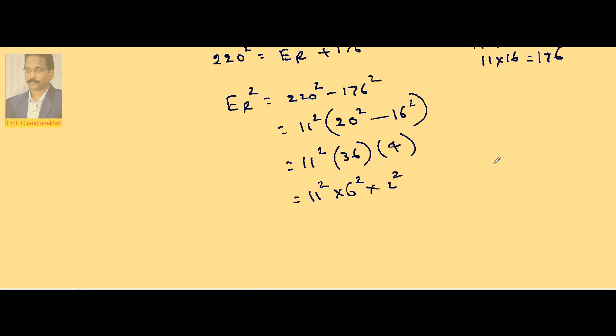So we need E_R value. Therefore E_R is equal to square root of these things. So it is nothing but 11 into 6 into 2. 11 into 6 is 66 into 2.